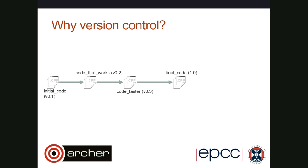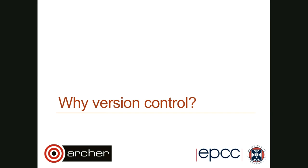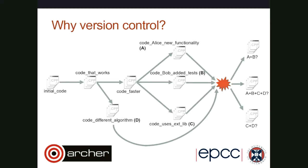Why do we care about version control? When writing documents or software, we often end up with different versions. We start off with some initial code, find out it doesn't work, make edits until we find something that works — that's version 0.2 — then make other changes to make the code go faster. That gives us our final code.